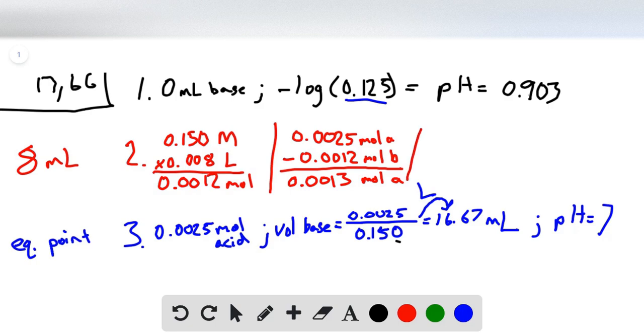So if we do 0.0013 moles divided by the liters—we initially had 20 milliliters of acid and added 8 milliliters of base, so now we have 28 milliliters of total solution—this equals 0.046 molar. If we take the negative log of this, we get pH equal to 1.33.